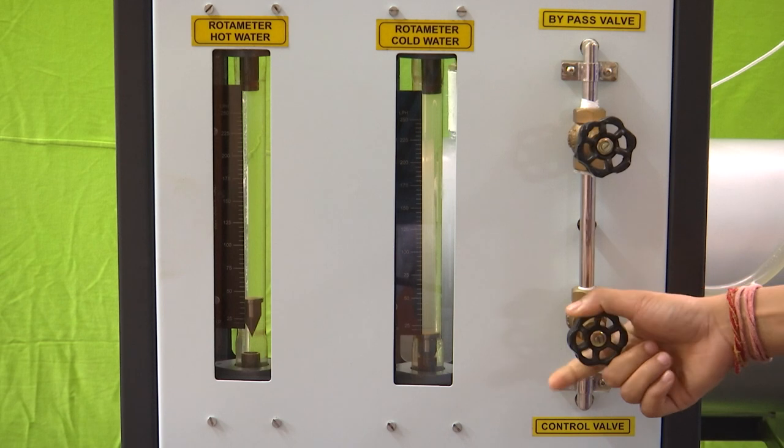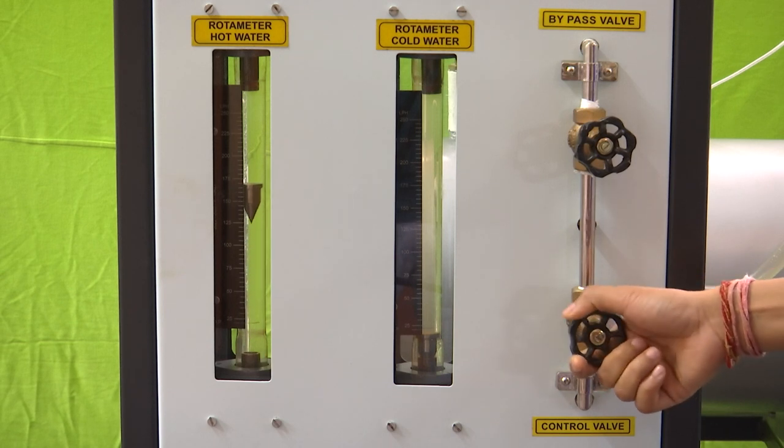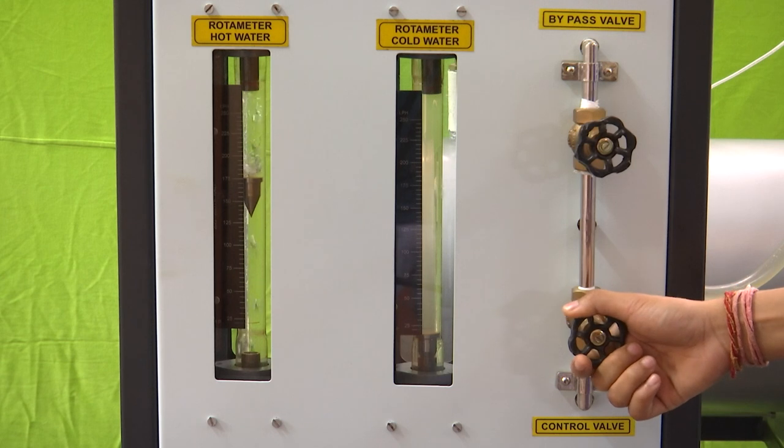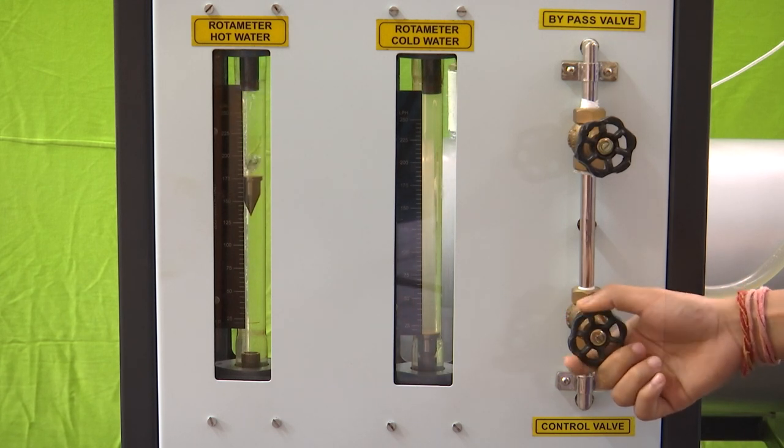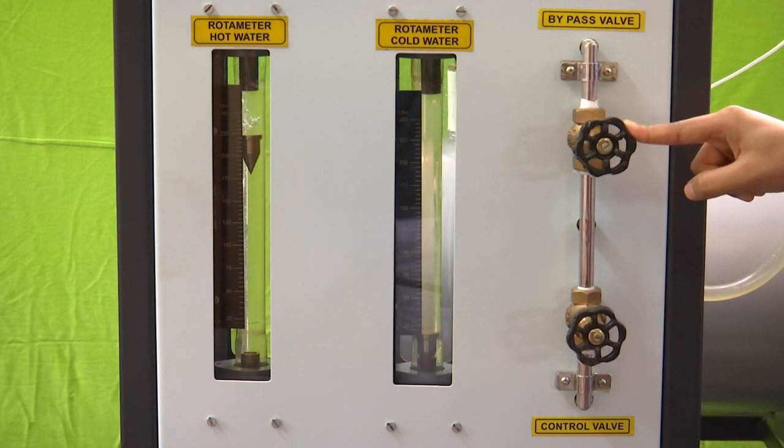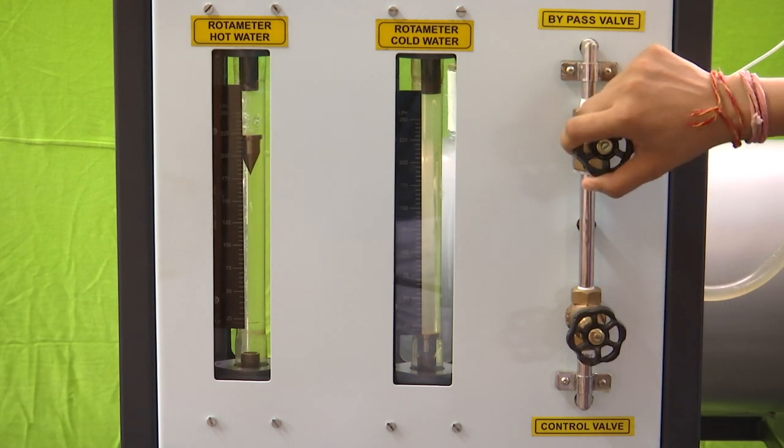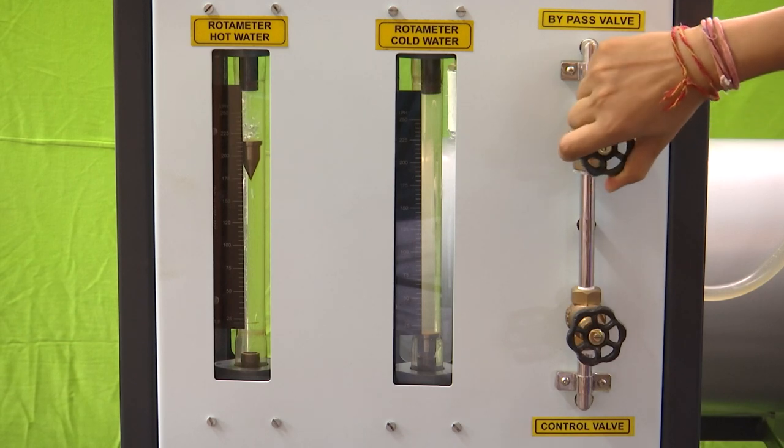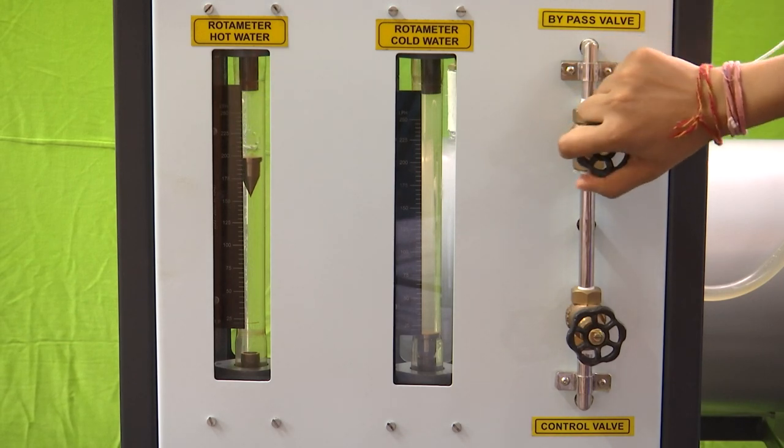While opening or closing we need to do it slowly and we need to make sure that the bubbles disappear completely before we take the reading, so that we get an error-free reading. Opening the bypass valve will decrease the flow rate, since the fluid will pass directly to the heating tank without passing through the heat exchanger.